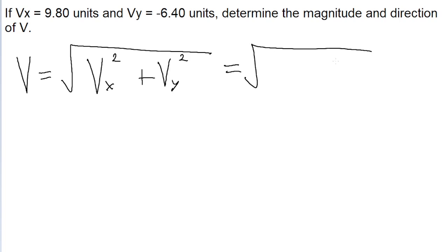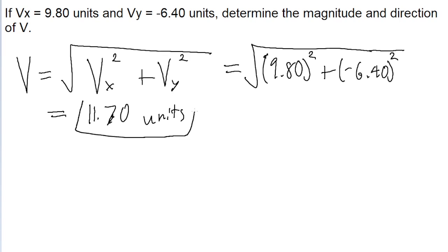So we put in our numbers. So that's the square root of 9.8 squared plus 6.4 squared. You don't even really have to put the negative sign, because the square cancels it out. And if you put this into a calculator, then we get 11.7 units. So that is the magnitude of the vector. That's the magnitude of V.